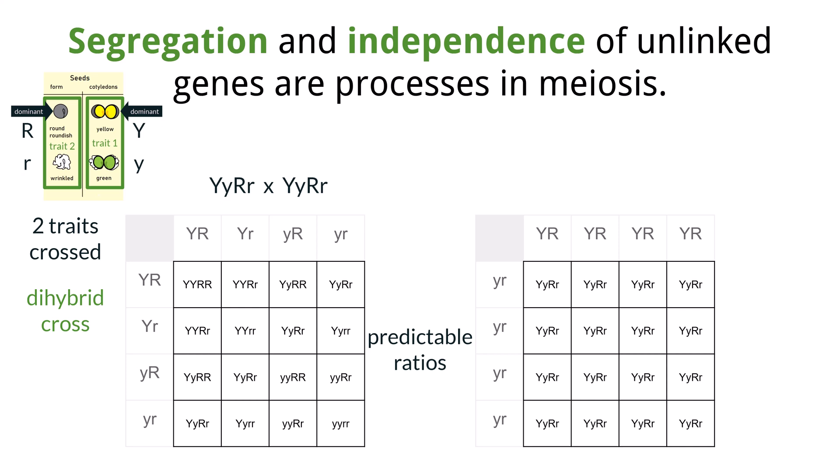When two heterozygotes for both genes are crossed, the resulting ratio is 9 to 3 to 3 to 1. This means that nine offspring may exhibit both dominant traits, either uppercase Y, uppercase Y, uppercase R, uppercase R, or uppercase Y, lowercase y, uppercase R, lowercase r.